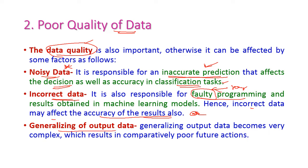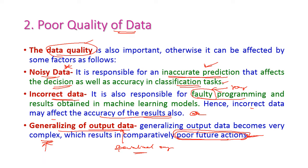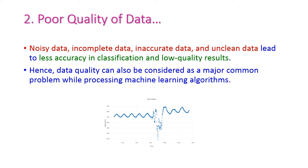Hence, noisy data, incomplete data, inaccurate data, and unclean data are errored data that reduce the quality of data, which leads to inaccuracy in classification and low quality results produced by the model. Therefore, data quality can also be considered as a major common problem in machine learning models.